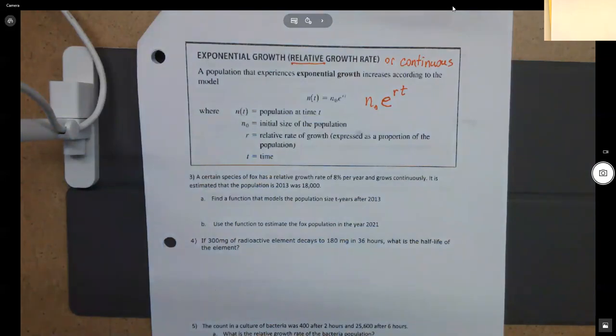So the first one is a certain species of fox has a relative growth rate of 8% per year and grows continuously. It is estimated that the population in 2013 was 18,000. So what I would like you guys to do is to find a function that models that population size T years after 2013.